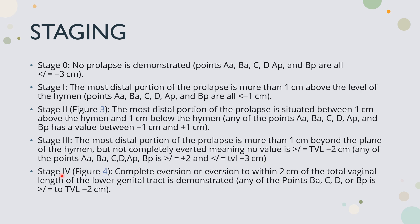Stage 4: complete eversion, or eversion to within 2 centimeters of total vaginal length, is demonstrated. Any of the points Ba, C, D, or Bp is greater than or equal to TVL minus 2. TVL is 9 centimeters, so TVL minus 2 equals 7 — measurements of 7 or beyond are Stage 4. Up to plus 6 lies in Stage 3, but beyond plus 6 is Stage 4. This is the simple way to memorize the staging of POPQ classification.